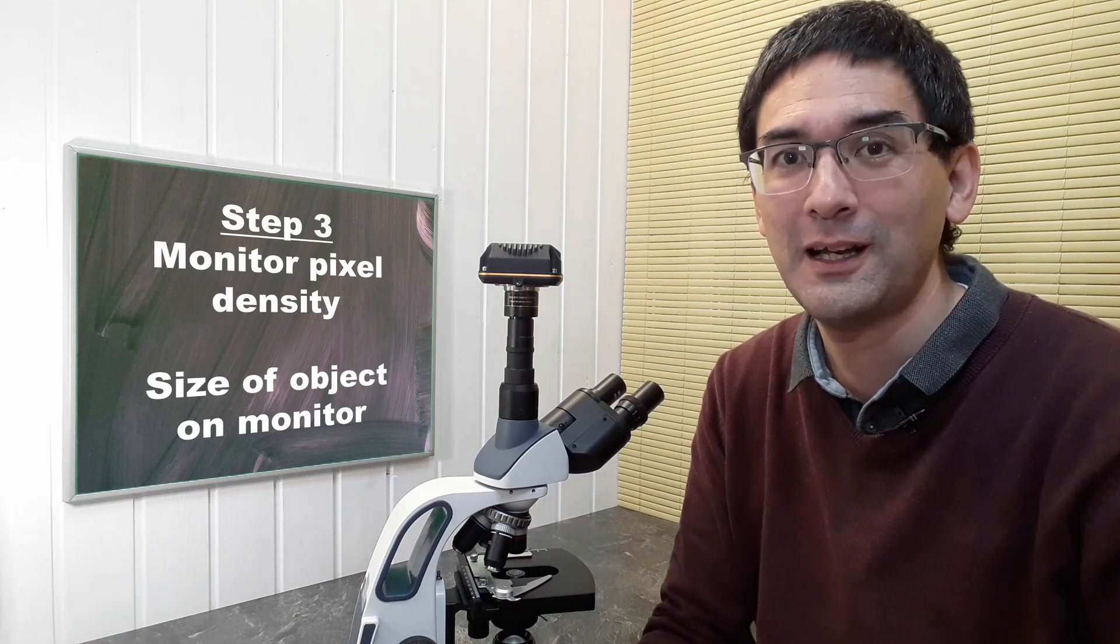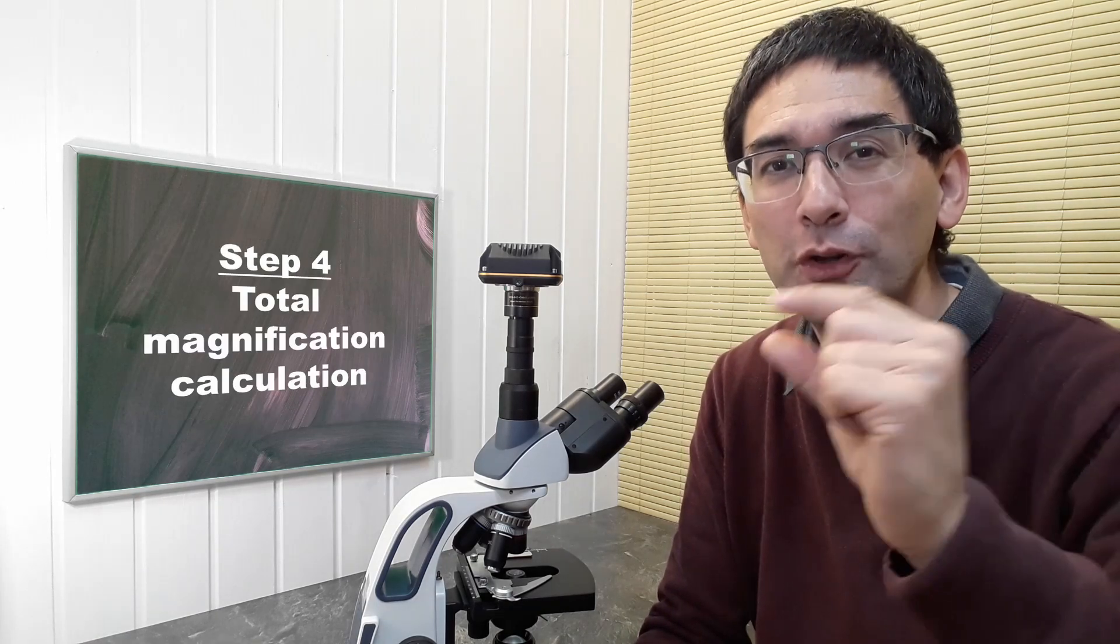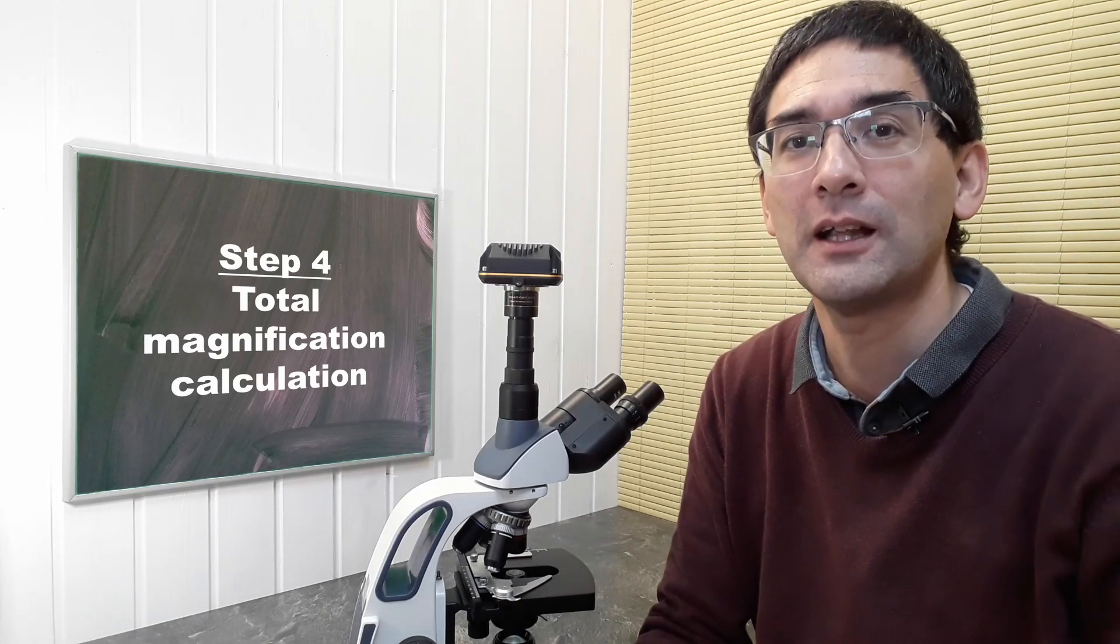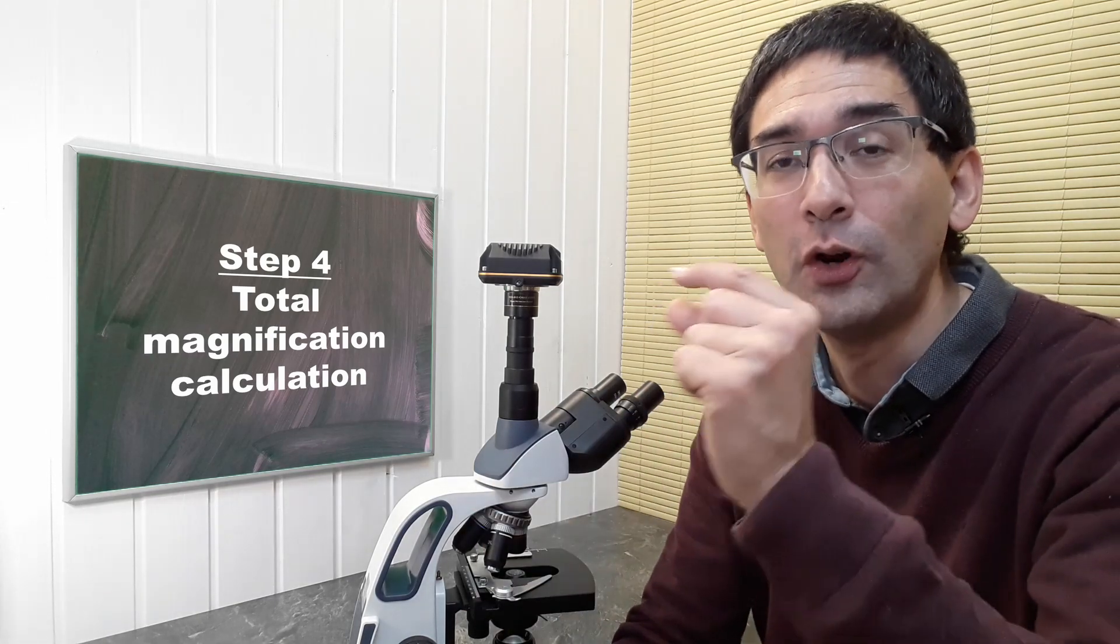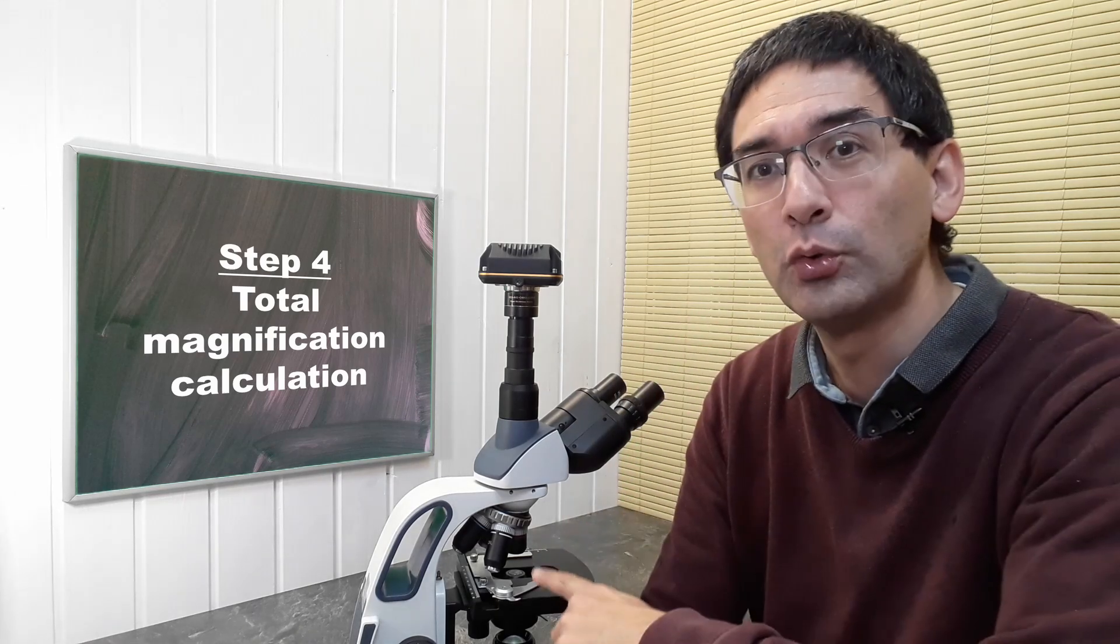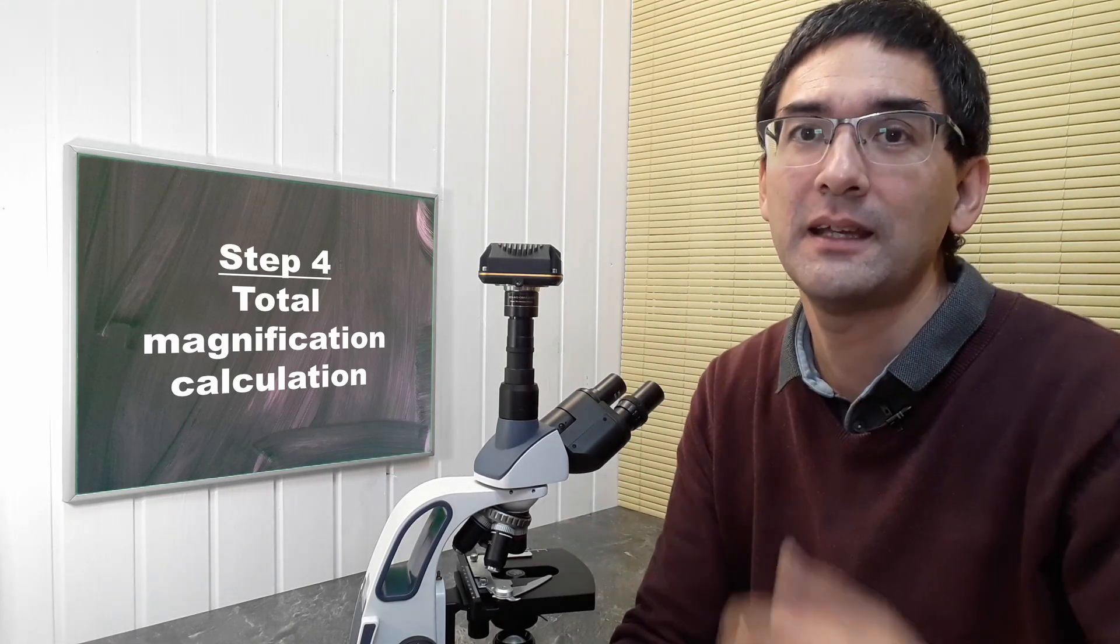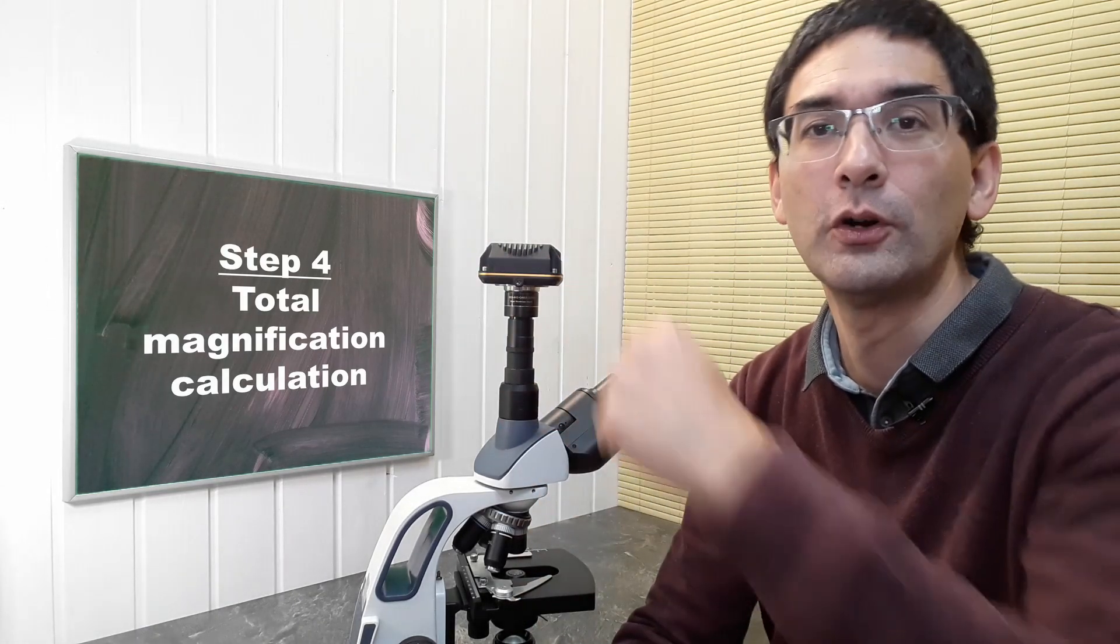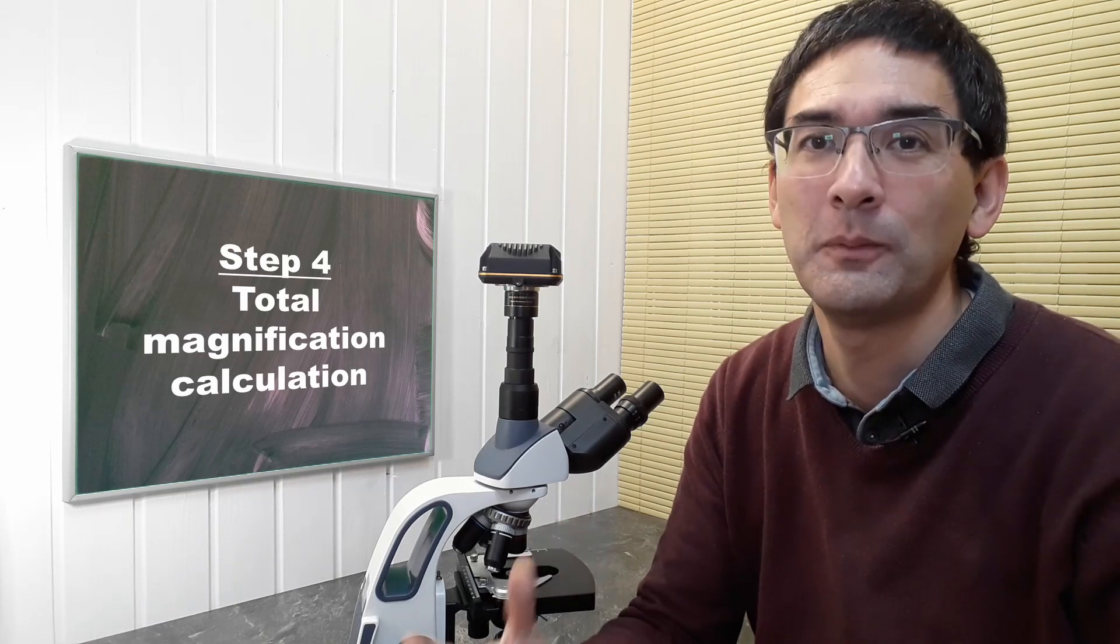Once I have the image on the monitor, I can do a total magnification calculation. I'm going to take a ruler and measure the size of the image on the monitor and divide it by the original size, then get the total magnification all the way from the object to my computer screen. That is the overview.